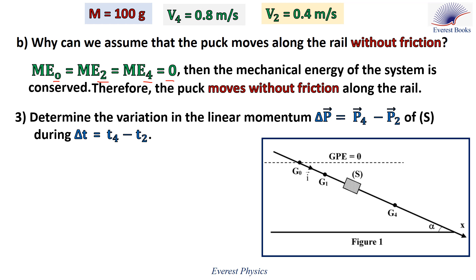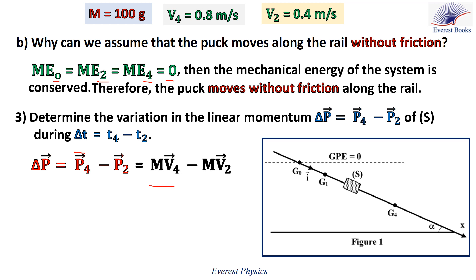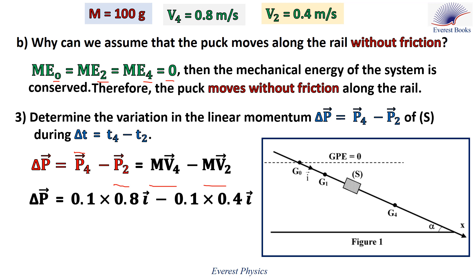Part 3: Determine the variation in linear momentum delta P equals P4 minus P2 of S during the time interval delta T equals T4 minus T2. Delta P equals P4 minus P2, where P4 equals MV4 and P2 equals MV2. Since S moves in the positive x direction, V4 equals +0.8i and V2 equals +0.4i. Therefore, delta P equals 0.04i kilograms·meters per second.